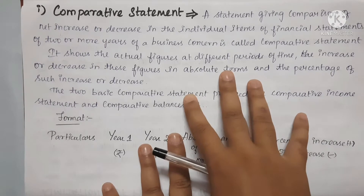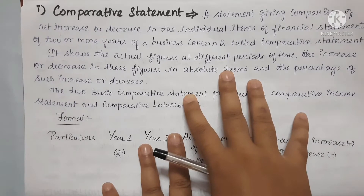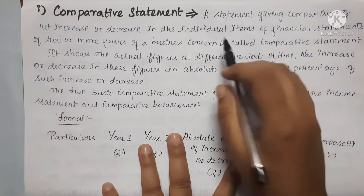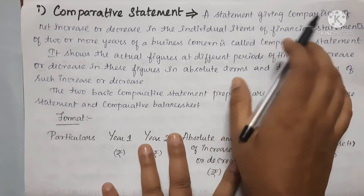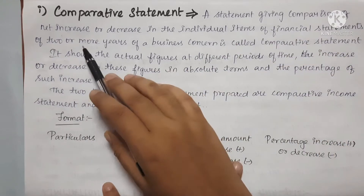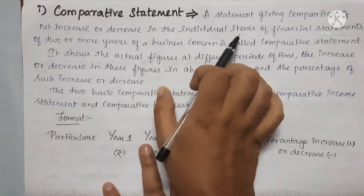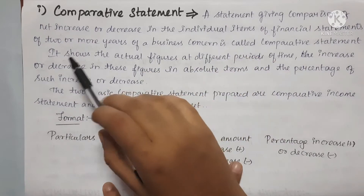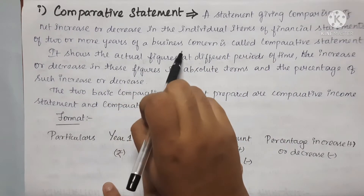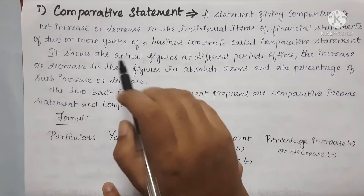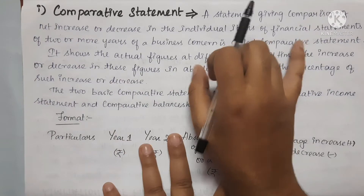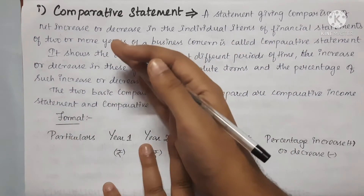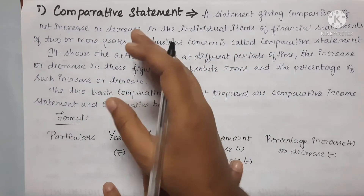Comparative statement — how do you compare it? A comparative statement gives a comparison of the net increase or decrease in individual items of the financial statement of two or more years of a business concern. So what we do is take the financial statements of either two years or more — basically two years, or three or four years.